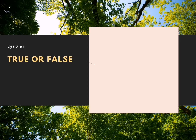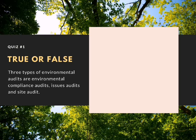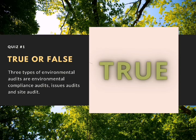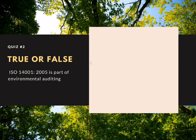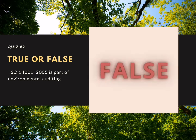Now we continue to our Q&A quiz. Answer true or false. Quiz one: Are environmental compliance audits, issues audits, and site audits three types of environmental auditing? The answer is true. Quiz two: True or false — ISO 14001:2005 is part of environmental auditing? The answer is false.